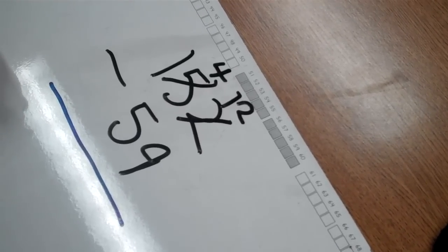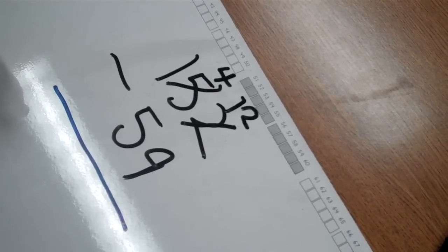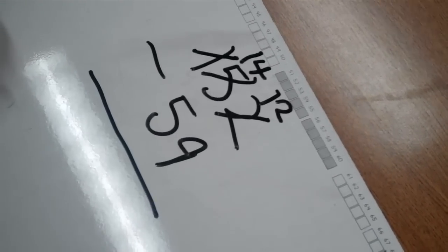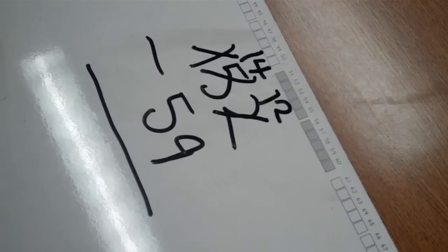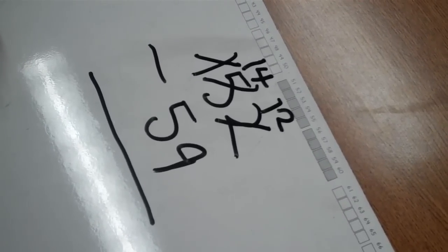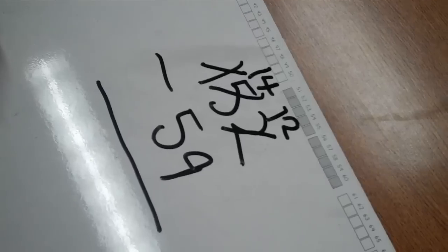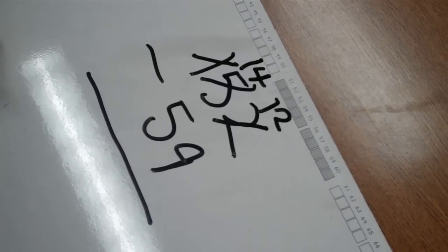You can see the student has changed to 4 tens and 12 ones, which still is 52. Now the student checks do I have enough tens to subtract? No. So the student is going to ungroup 100 into 10 new tens.